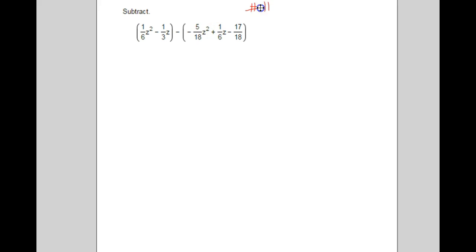Now the first thing we've got to do is realize that we're subtracting, so this negative sign right here in the middle, we're going to have to distribute through, so it's going to change the sign of all these things in the second set of parentheses. So originally we got a minus 5/18 z squared, and that's going to become a plus 5/18 z squared, and a minus 1/6 z and a plus 17/18. So that's the first thing we need to do is get rid of that first set of parentheses.